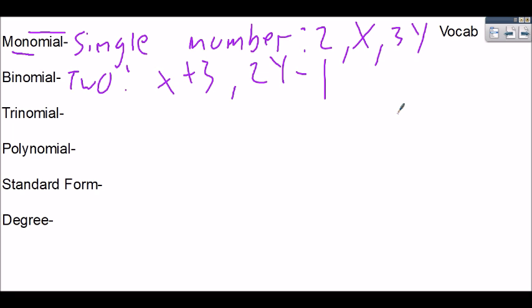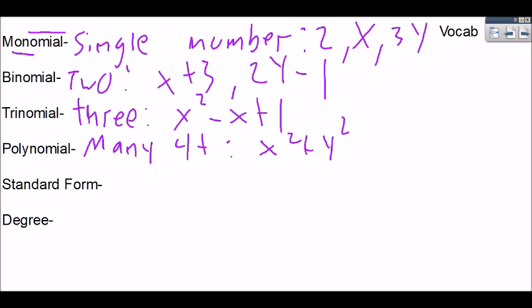Trinomial means three numbers. An example of that could be x squared minus x plus 1. Because of this square we can't combine these x's yet. So there's three very identifiable numbers. And poly means many, so anything greater than 3. An example of that could be x squared plus y squared minus x plus 2. These exponents make it so we can't combine and because there's different bases we can't add these together.